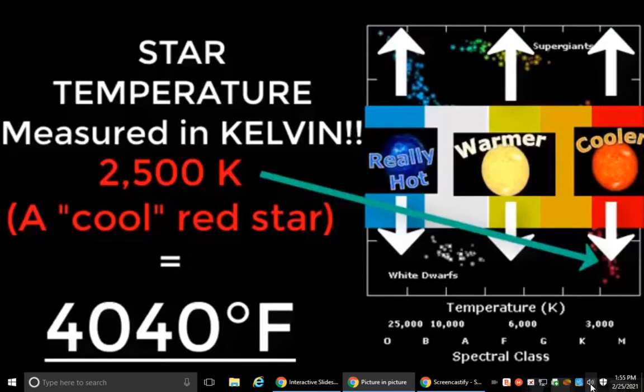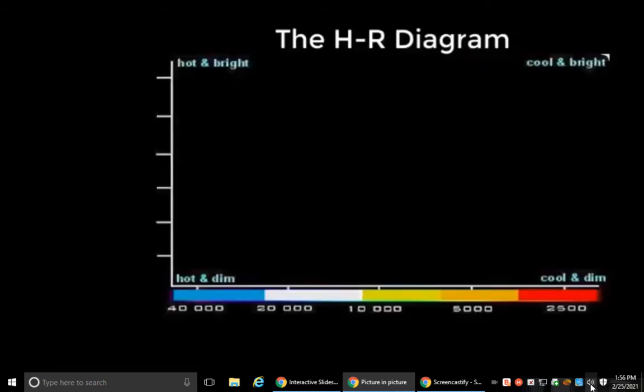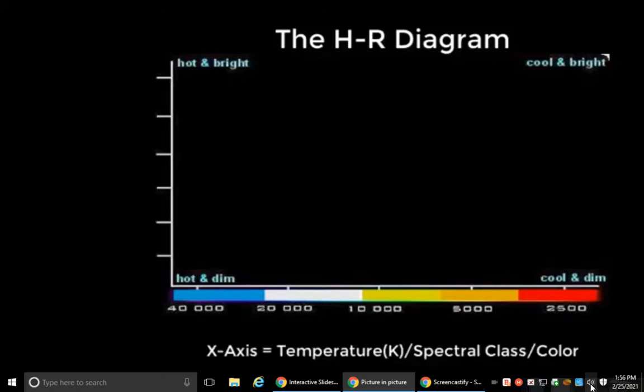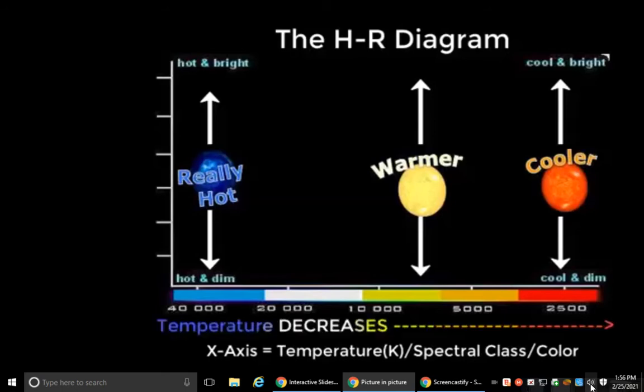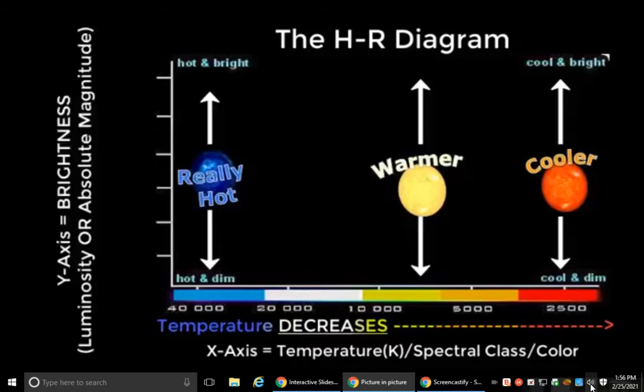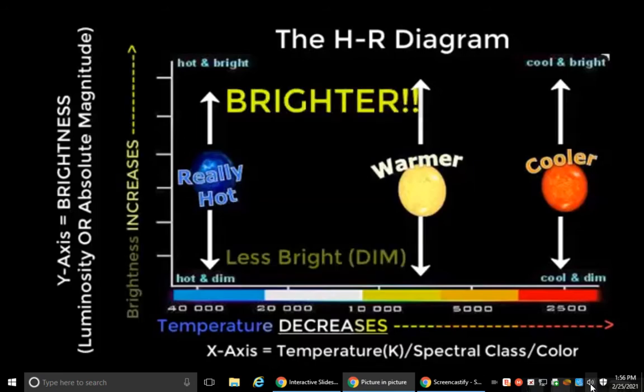Okay, so let's summarize everything you just learned. The HR diagram is a graphic representation of stars. The x-axis can have three different categories, but they all mean the same thing. Temperature in Kelvin, spectral class, or color. These start with the hottest blue colors on the left and decrease to the cooler reds on the right, which are still melt your face off hot to us, but are cool and red in the star world. Brightness is either measured in luminosity or absolute magnitude on the y-axis, and it increases as you go up. Got it?